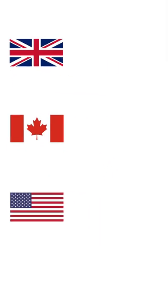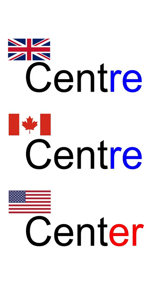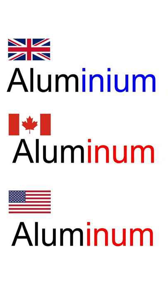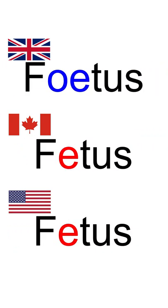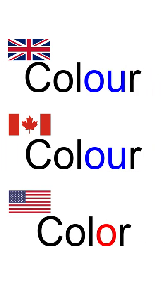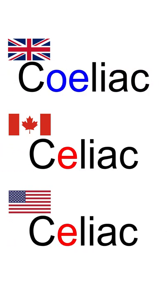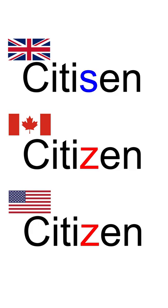I like to describe Canadian English as a compromise, because it uses patterns from both dialects. I'm sure you all know the stereotype — Canadians spell color with a U, because we do. We also spell citizen with a Z, like Americans.